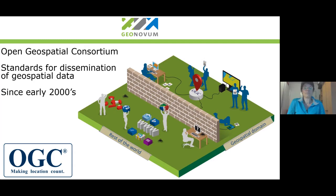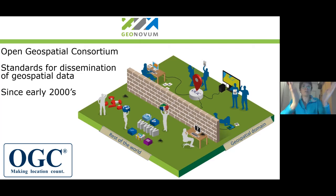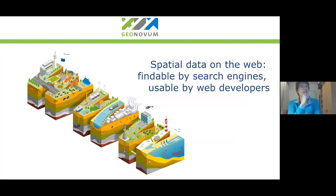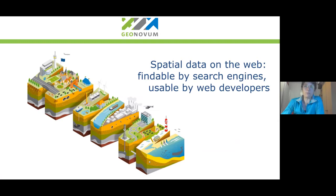We decided that we wanted to change that. But it seemed that the rest of the world — sort of the web, the wider web community — were using different standards and different ways of working than the geospatial domain. We sort of developed parallel worlds. So we decided that in order to make our data usable for the wider web community, we had to publish the spatial data on the web, so it would be findable by search engines and usable by web developers or data users.